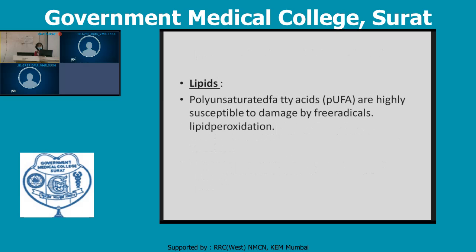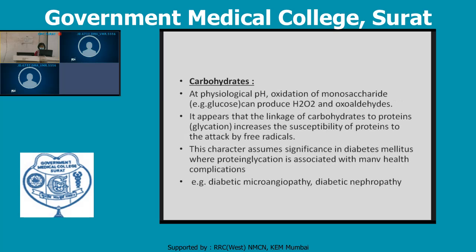In lipids, polyunsaturated fatty acids are highly susceptible to damage by free radicals — that is, lipid peroxidation. In carbohydrates, it forms hydrogen peroxide and oxaloaldehyde. The linkage of carbohydrate to protein, that is glycation, increases the susceptibility of protein to attack by free radicals. This is significant in diabetes mellitus, where protein glycation is associated with complications like diabetic microangiopathy and diabetic nephropathy.